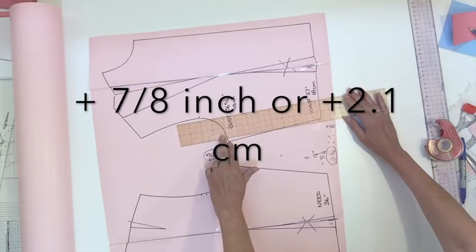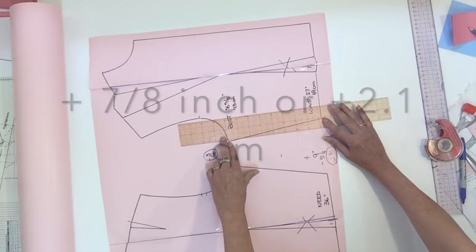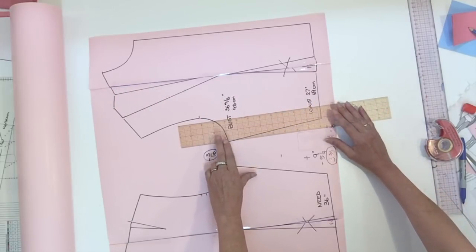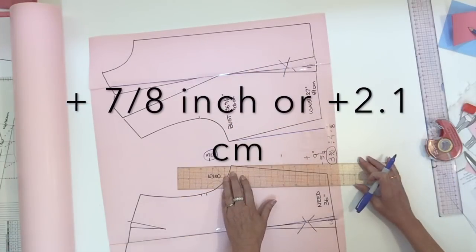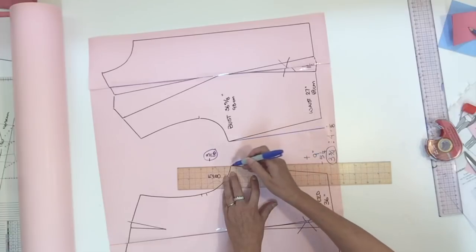Nothing at the underarm. I'm going to add 7/8 of an inch at the side seam. Same thing for the back. Nothing at the underarm and 7/8 at the side seam.